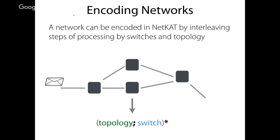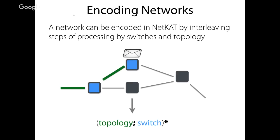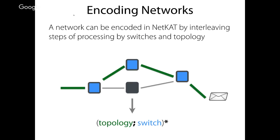The animation shows: a packet enters the network, the topology sends it across the link to the first switch, the switch processes it and sends it out a port, then it's forwarded across the topology again to another switch, and so on. This iterated processing continues until the packet reaches the edge of the network — a host — where it stops being forwarded. The Kleene star operator expresses exactly this iterated behavior, giving us a model for the end-to-end behavior of the entire network.